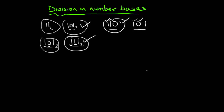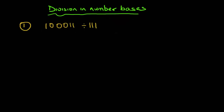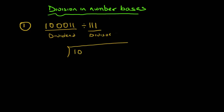Now if you understand this, let's take an example. Remember we call this the divisor and this is the dividend. We have the division sign and the dividend inside: '1000011', and the divisor is '111'. Now let's do this.